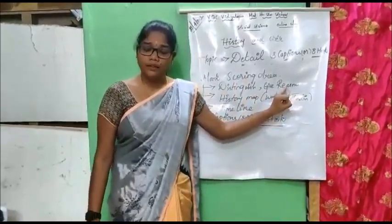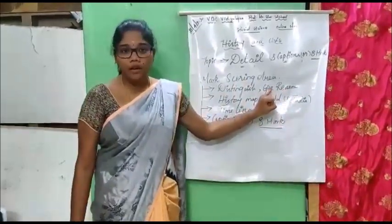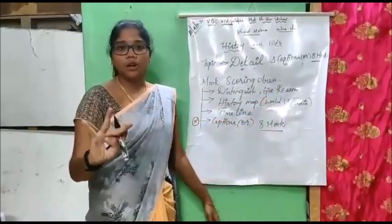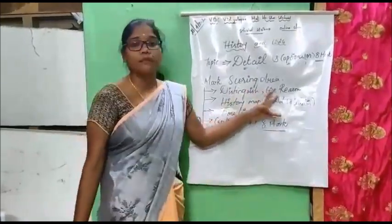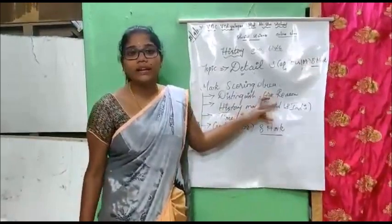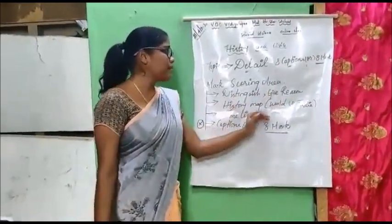What you should do: totally you have 7 lessons in Geography, read all 7 Geography lessons. Distinguish and Give Reason is the easiest way to get 5 marks.